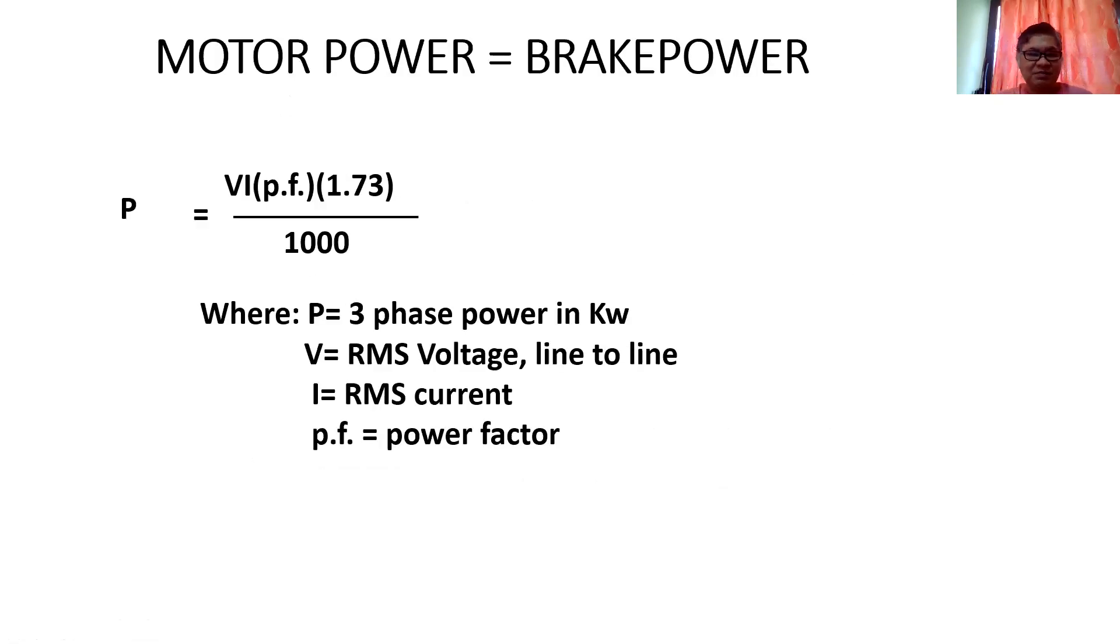The motor power or the brake power needed by the motor can be calculated as P equals V times I times power factor times 1.73 divided by 1000. Where P is three-phase power in kilowatts, V is RMS voltage line to line, I is RMS current, and p.f. is power factor.